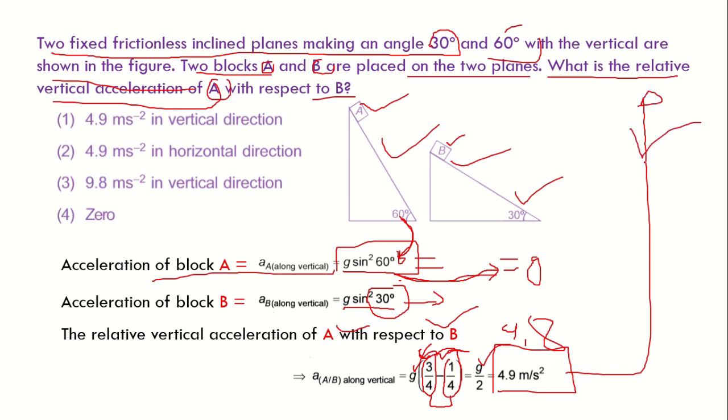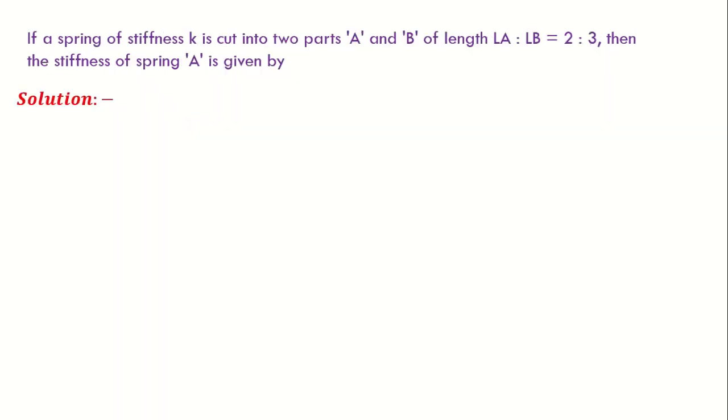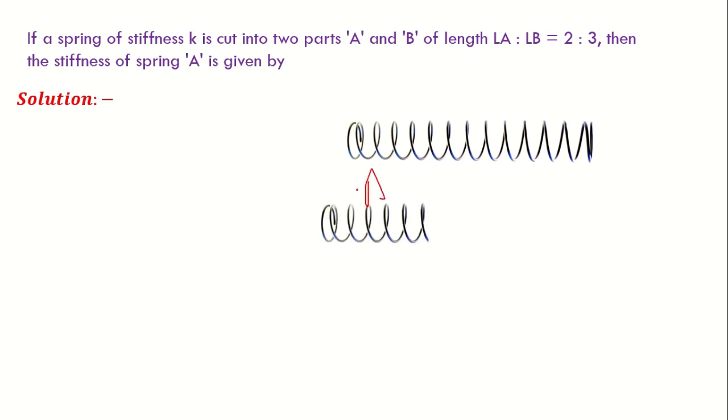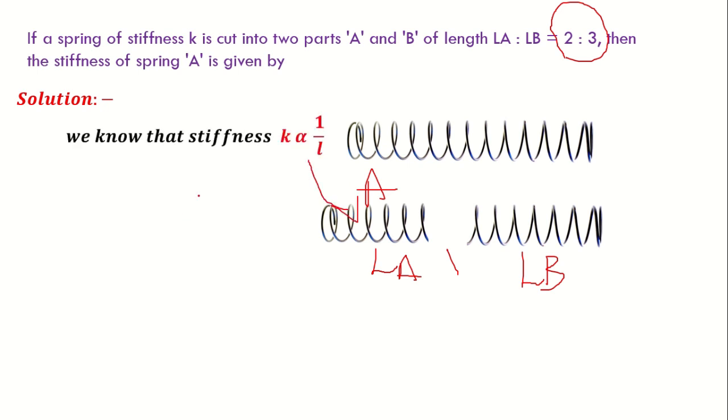Now let us move on to the next question. In this question, there is a spring and it is cut into two parts, A and B. The length of this one is LA and the length of this one is LB, and the ratio between these two is given 2 is to 3. Then we have to find the stiffness of this spring. We know that stiffness is inversely proportional to the length of the spring.